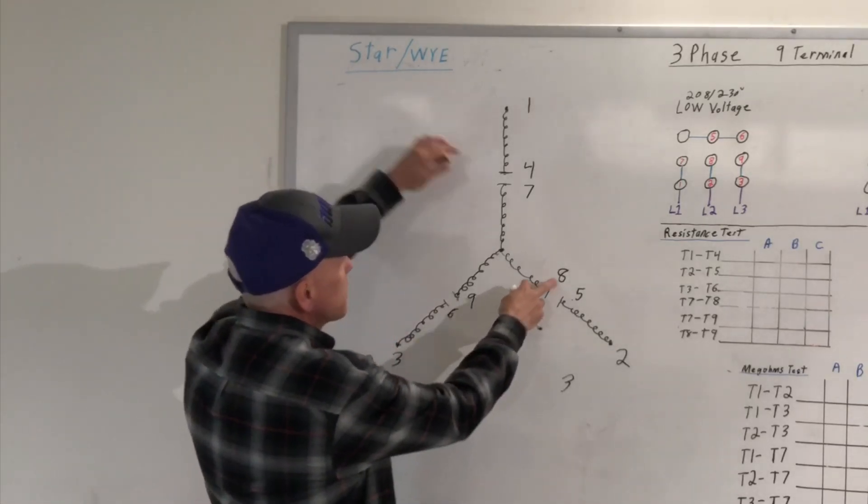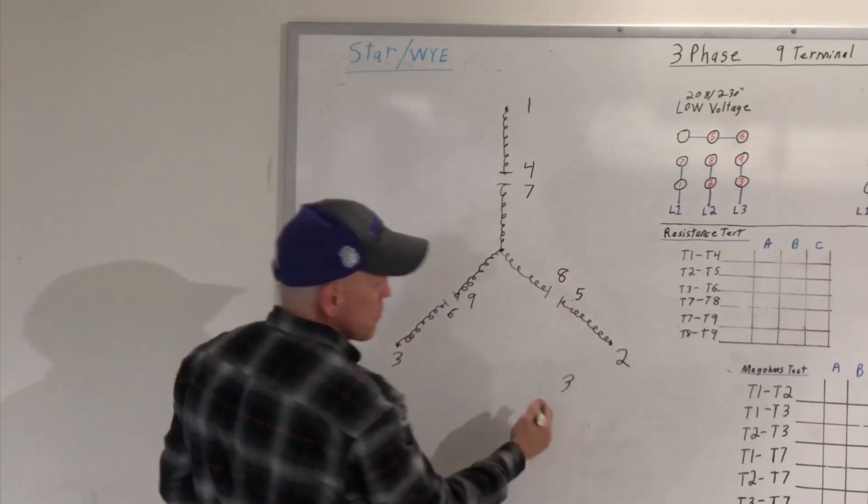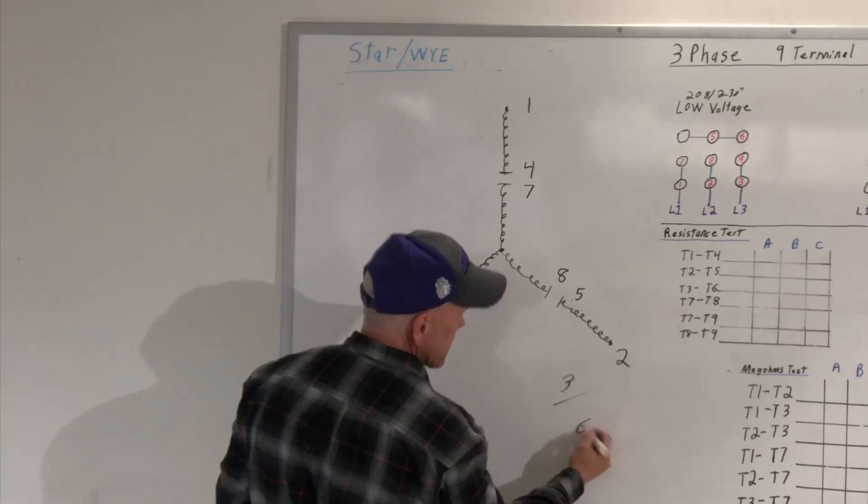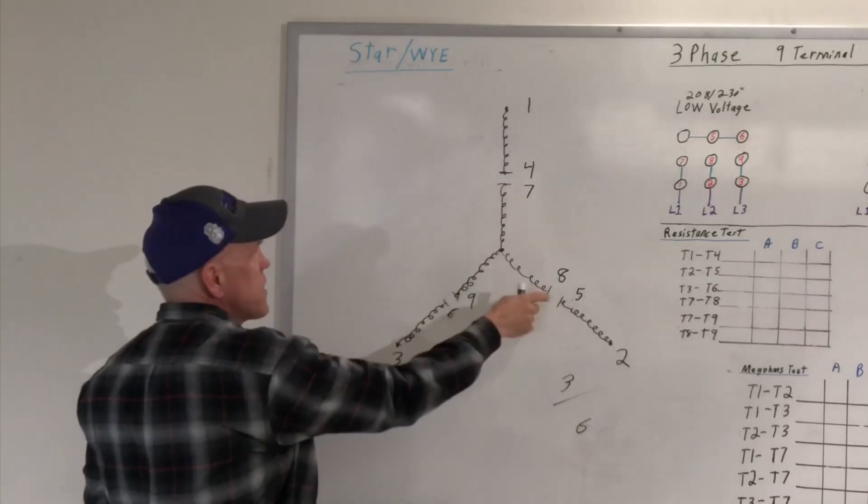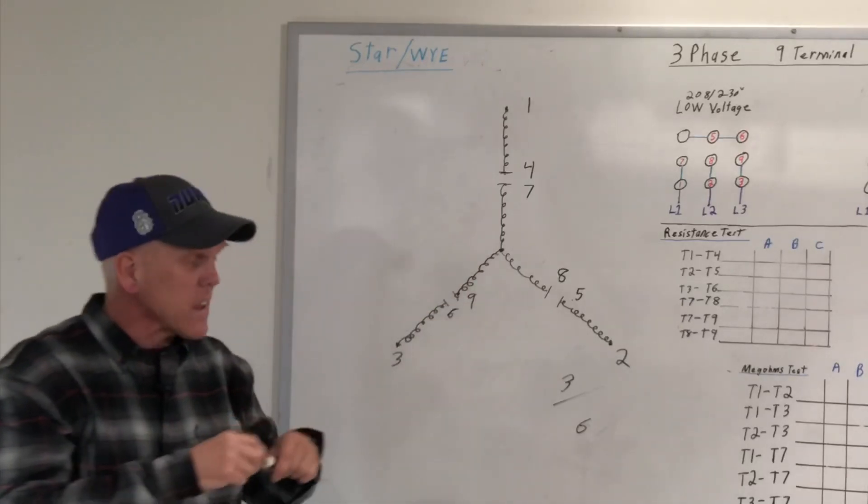But when I do my seven to my eight, these windings are the exact same size as this one. So I'm going to have two of them. So I'm just going to be looking at maybe trying to get a six or close to a six, between seven and eight, seven to nine and nine and eight, because it's just adding two of these windings together.